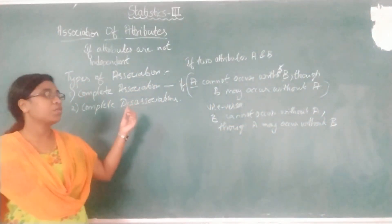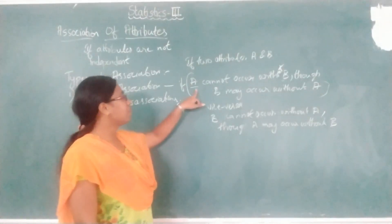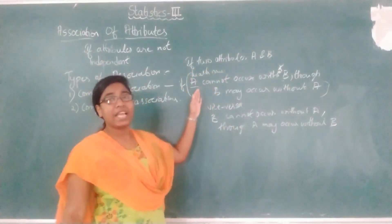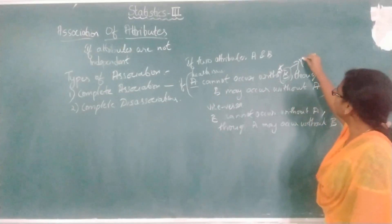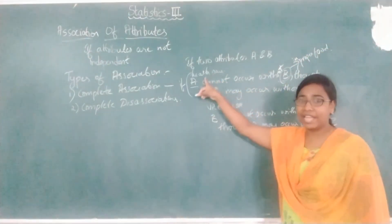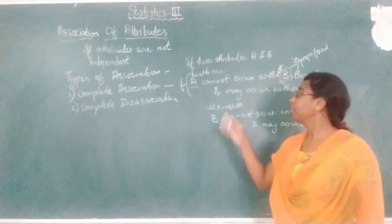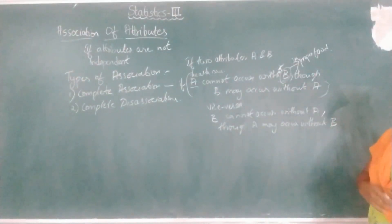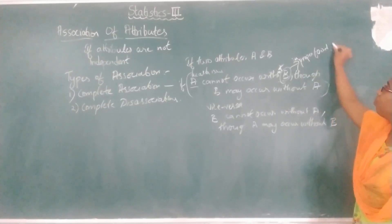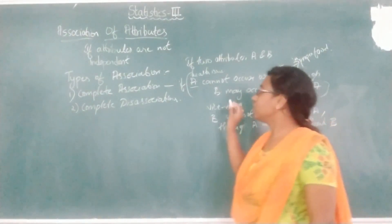Simply put — suppose how will you get health issues? If you don't take proper food, then you will get health issues. If we consider A as some health issue: health issue A cannot occur without B (improper food). So if you have improper food, then only you will get health issues. A cannot occur without B, but the reverse may be true — B cannot occur without A. Improper food is independent; it may be caused by any other thing also. This is complete association.